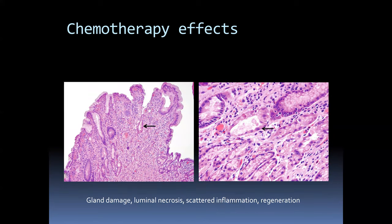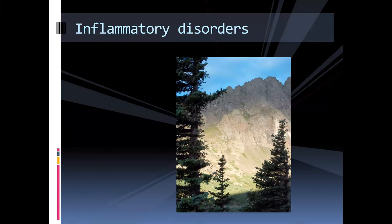In patients being treated for cancer, chemotherapy can produce glandular damage and provoke cytologic atypia. Radiation damage to the stomach looks not terribly dissimilar — mild inflammatory change, regenerative features, gland dropout, and hyperplasia all mixed together.